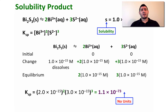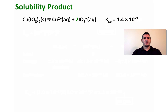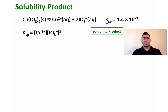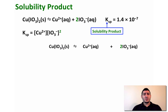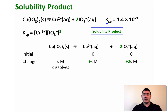How else can we use the Ksp? Let's look at the dissolution of copper(II) iodate, Cu(IO₃)₂, which gives Cu²⁺ plus 2 IO₃⁻. The Ksp of this equilibrium is 1.4×10⁻⁷. The Ksp expression is [Cu²⁺][IO₃⁻]². Writing the ICE table: initially no Cu²⁺ nor iodate. When S moles per liter of copper(II) iodate dissolve, we get S molar for Cu²⁺ and 2S molar for IO₃⁻ at equilibrium.